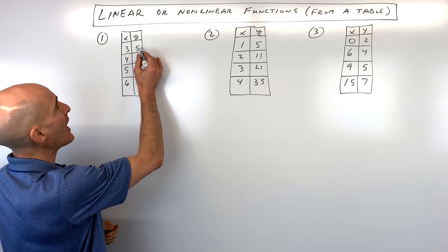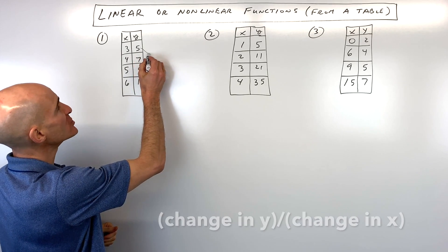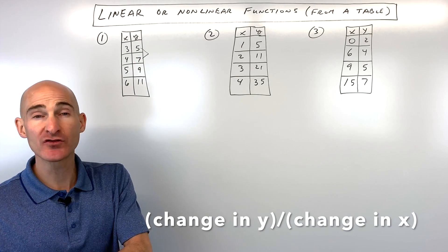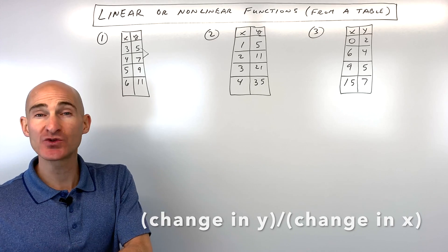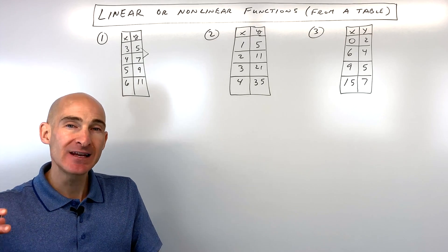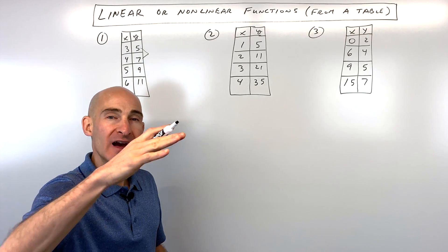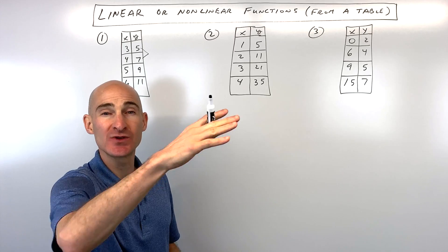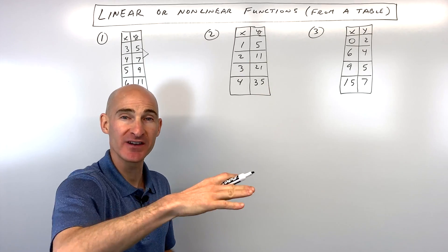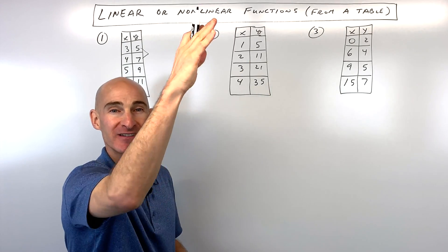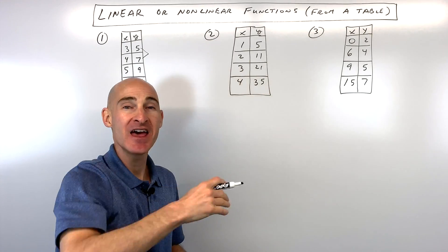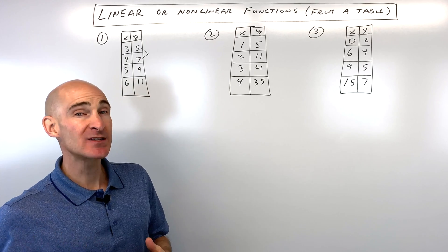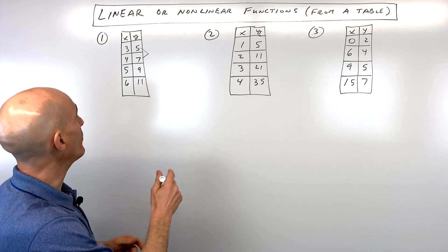We want to look at the change in y over the change in x. Slope is the rise over the run, or the change in y over the change in x. If it's linear, it's going to go up at a constant rate, meaning that slope is going to be continuously the same. We don't want it to start off one way and then change — we want a constant, consistent slope.